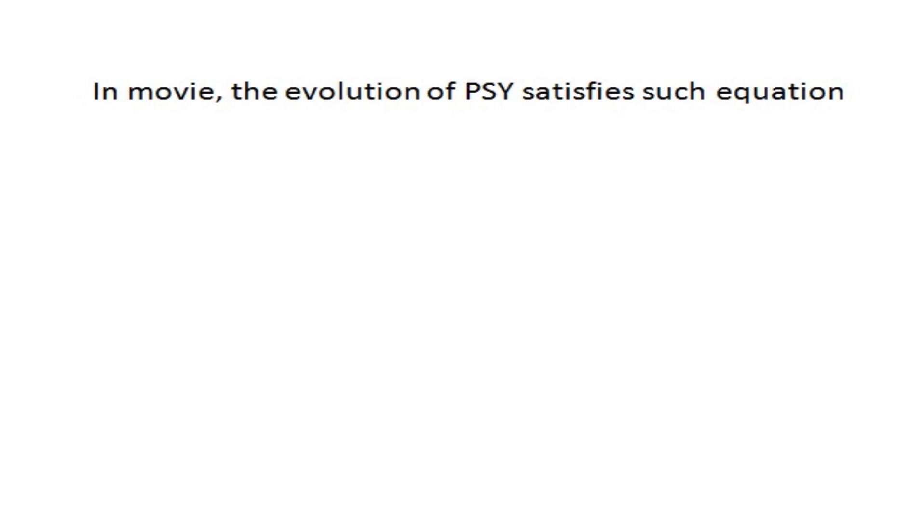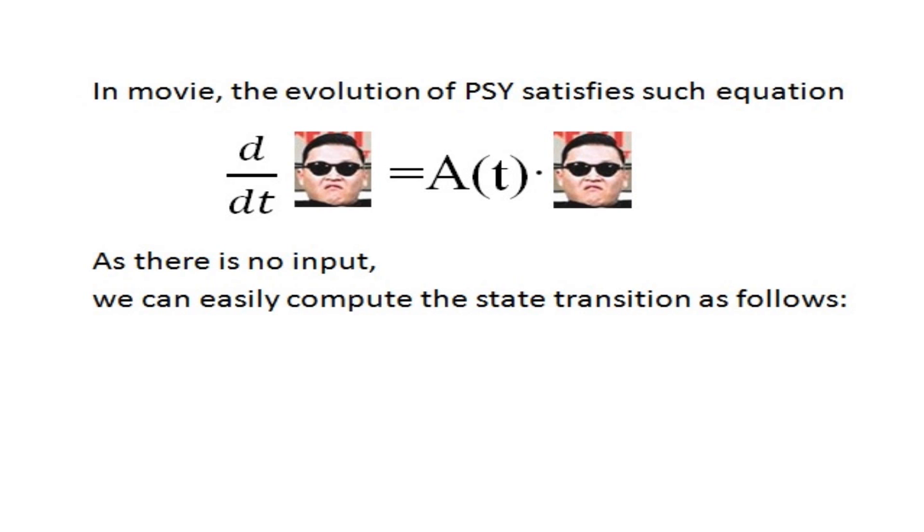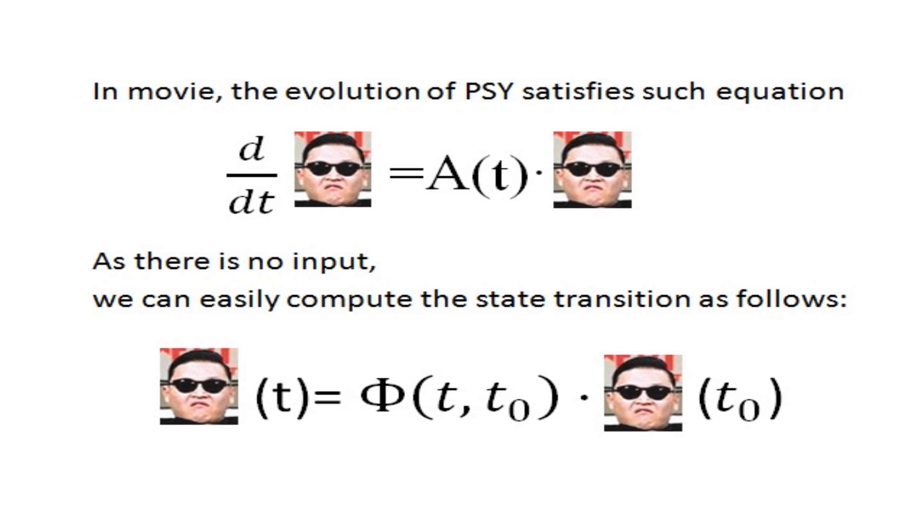In this movie, the evolution of psi satisfies such equation. As there is no input, we can consider the dancer as an autonomous system. So we can easily compute the state transition as follows. If we know his motion in T0 and the state transition matrix from T0 to T, then we can easily compute his motion in T.